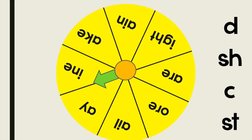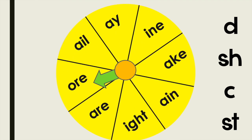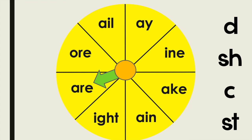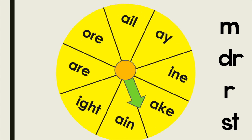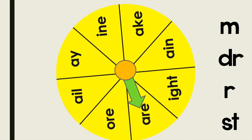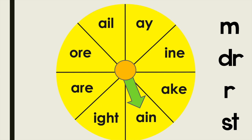Air. I know it looks like R, but remember these are long vowel word families. This sound — Ane.